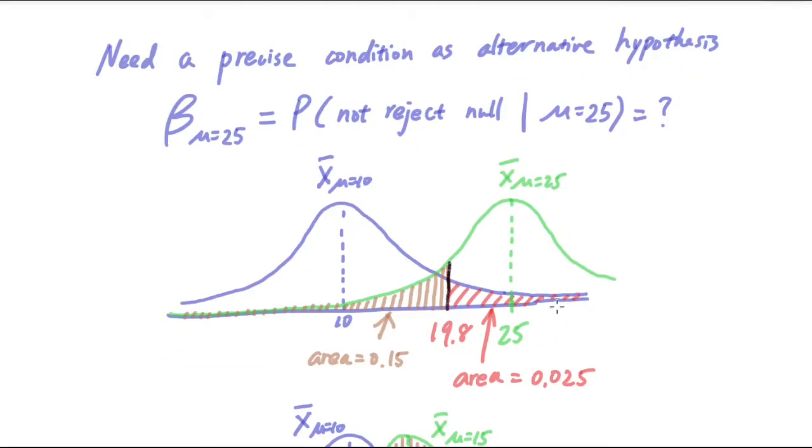So I have the purple curve here, which is representing the distribution of x-bar under the null hypothesis that the mean is at 10. And you can see that the red area here represents alpha, which is the 0.025. And the green curve on the right side is the distribution of x-bar under the alternative hypothesis, which is when mu is equal to 25.